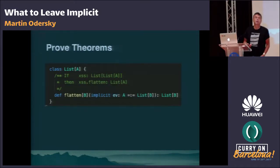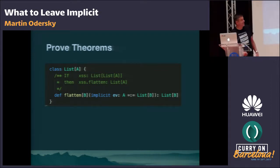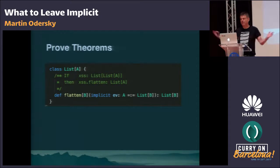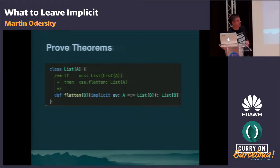Proving theorems: consider the flatten method on lists. Flatten has an interesting contract — if the list is itself a list of lists, flatten will collapse the two levels and give you a single list. It has a funny type signature which says it needs evidence that the type A of the list is the same as another list of a variable B, and if that's the case it will return a list of B.